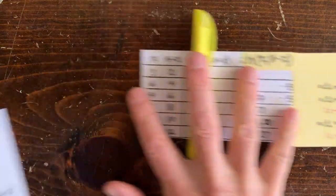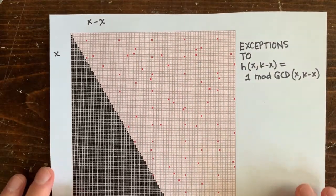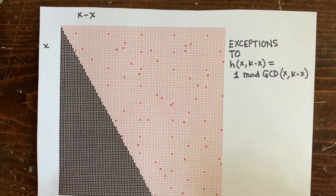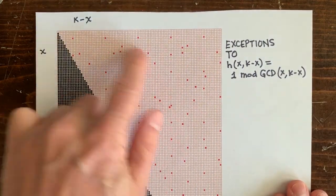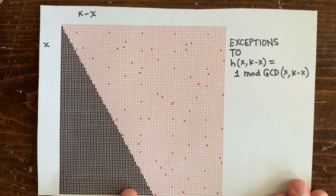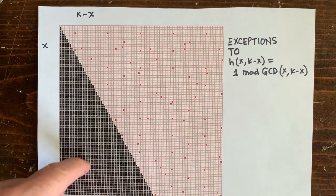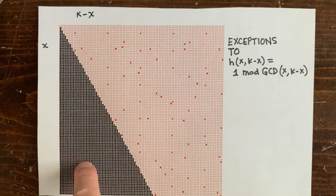And if we zoom out of this chart, we can see that for sure h is 1 mod the gcd almost everywhere. There's very few exceptions here in red. This black part here is where 3n plus 1 cycles have negative numbers. We don't care about negative cycles.